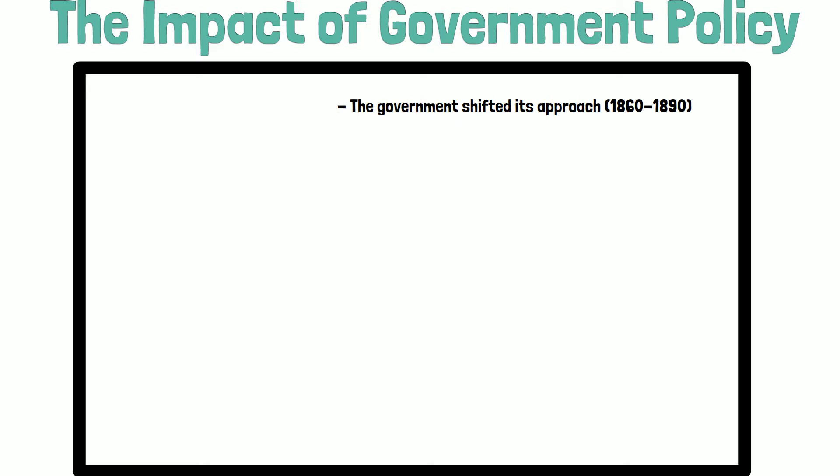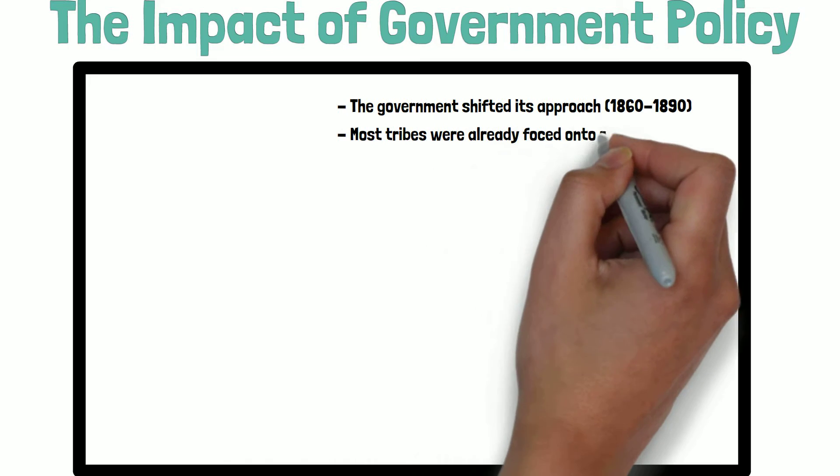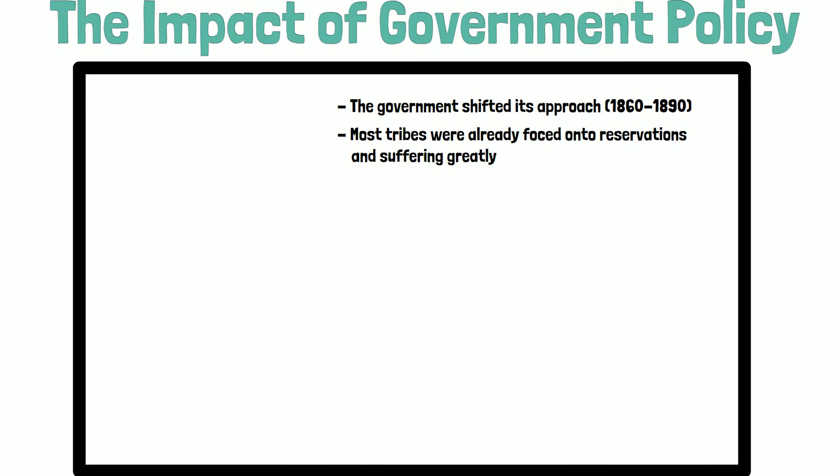The approach of the U.S. government toward the Native Americans shifted between 1860 and 1890. Early approaches were defined by conflict and forced relocation. Toward the 1870s, the government shifted in its approach towards the tribes. By this point, most of the tribes in the West were either confined to reservations or devastated by the loss of buffalo and the conflict with American settlers and troops. In 1867, the Indian Peace Commission decided to remove all remaining Indian tribes to reservations and made efforts to civilize them.